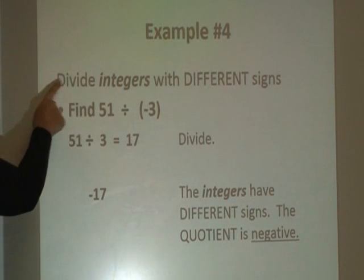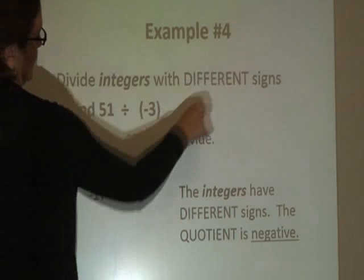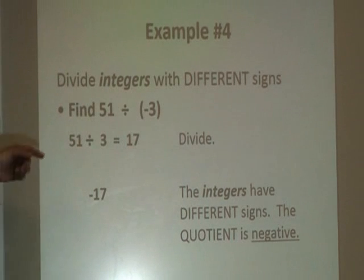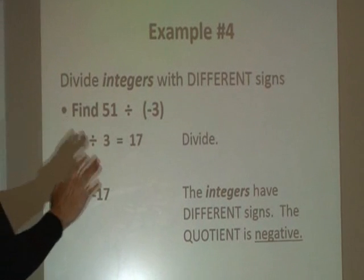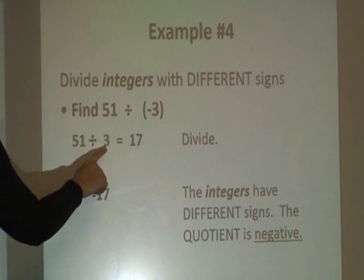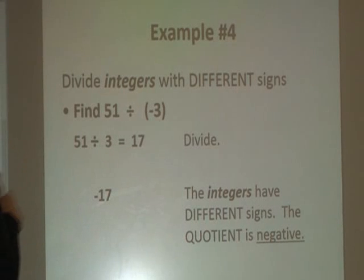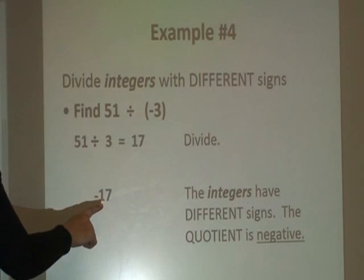Please make note that this is dividing integers with different signs. The problem in front of us says, find 51 divided by negative 3. So simply start with division. 51 divided by 3 is 17. And now let's decide on what the sign should be.